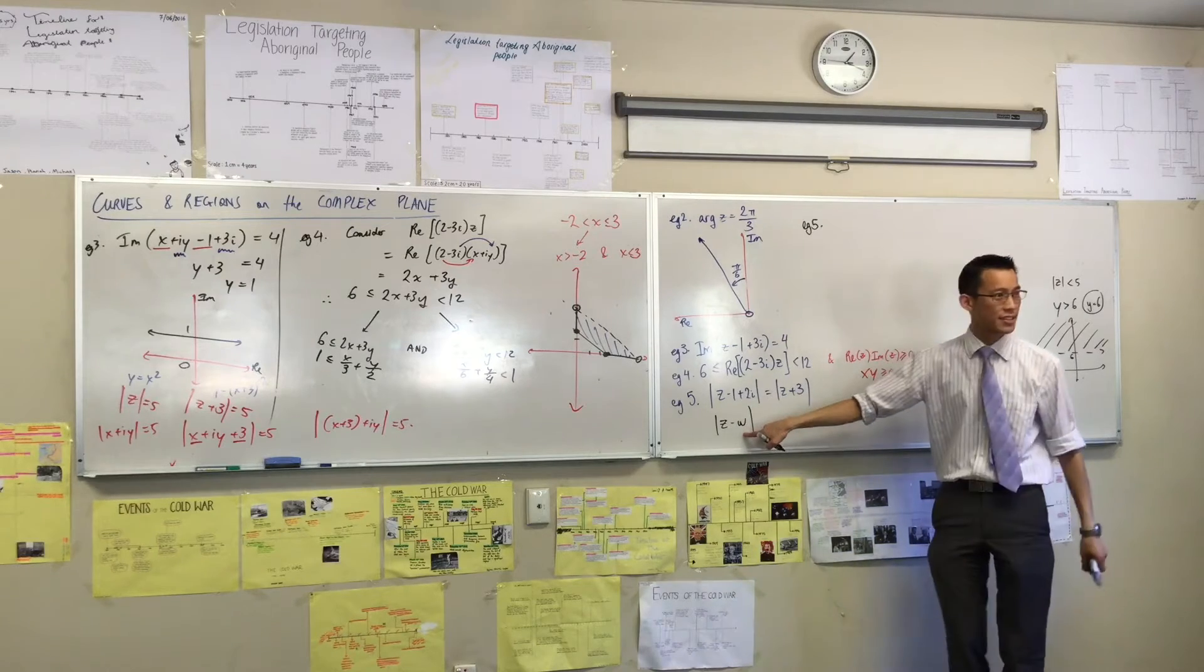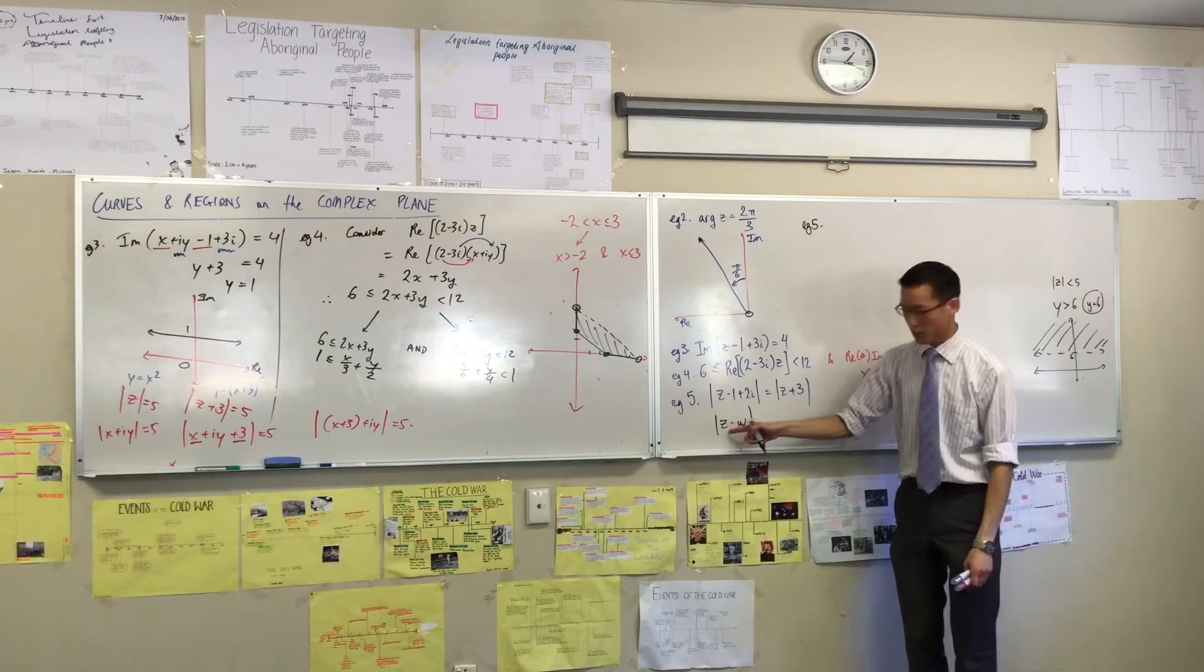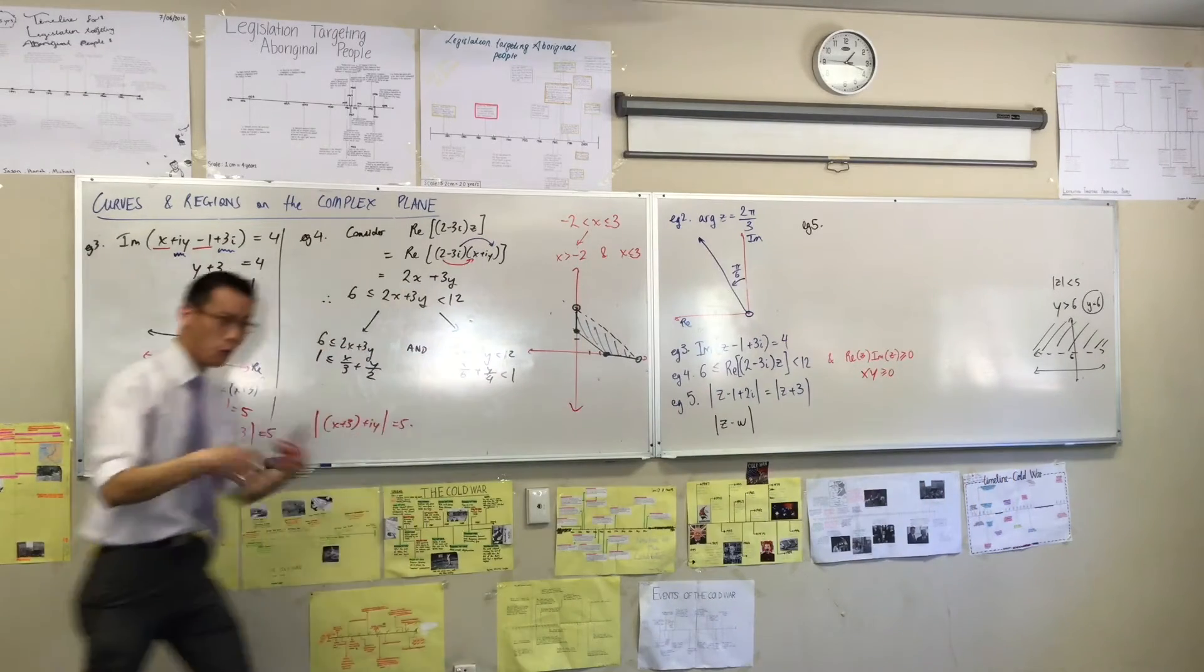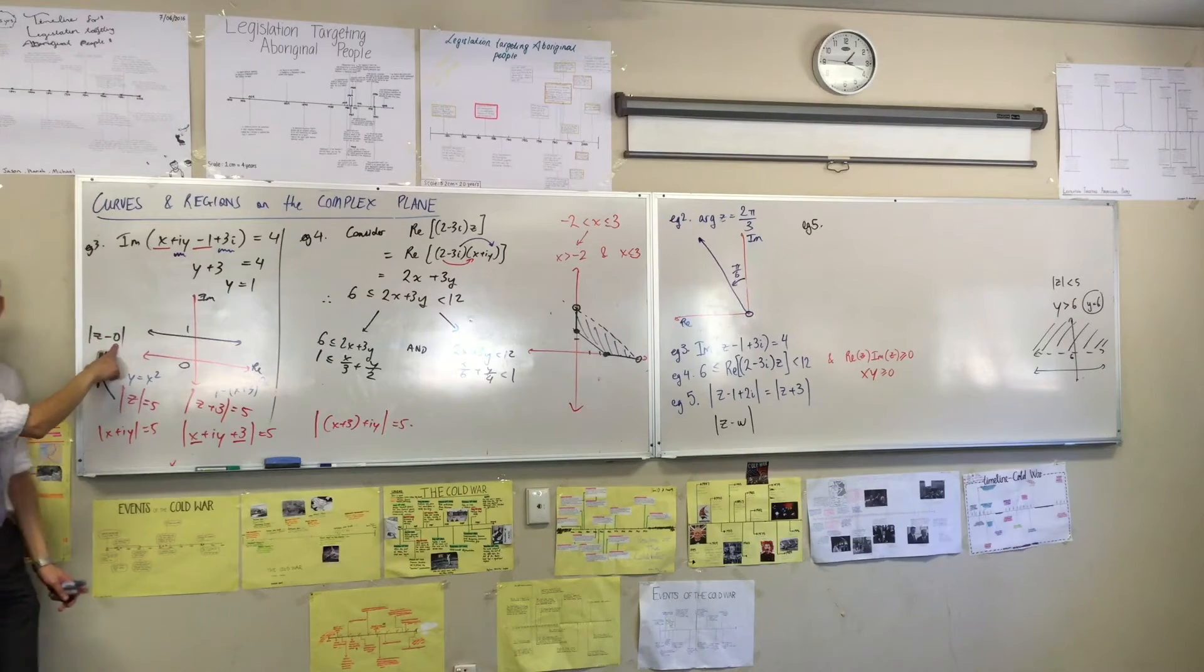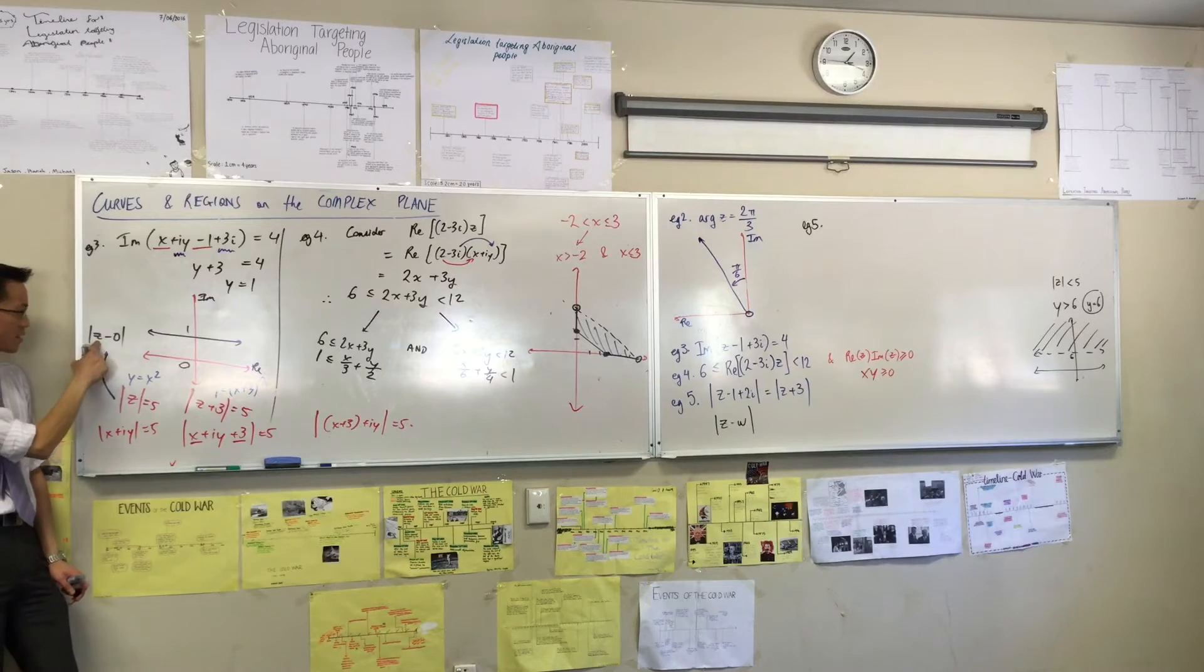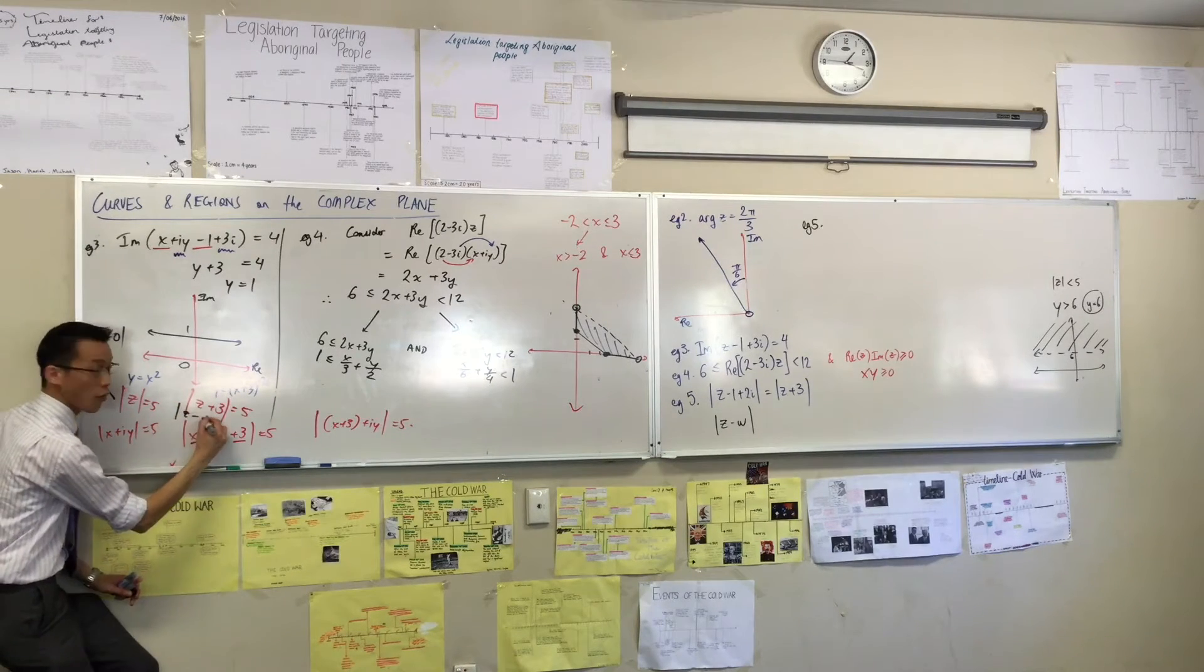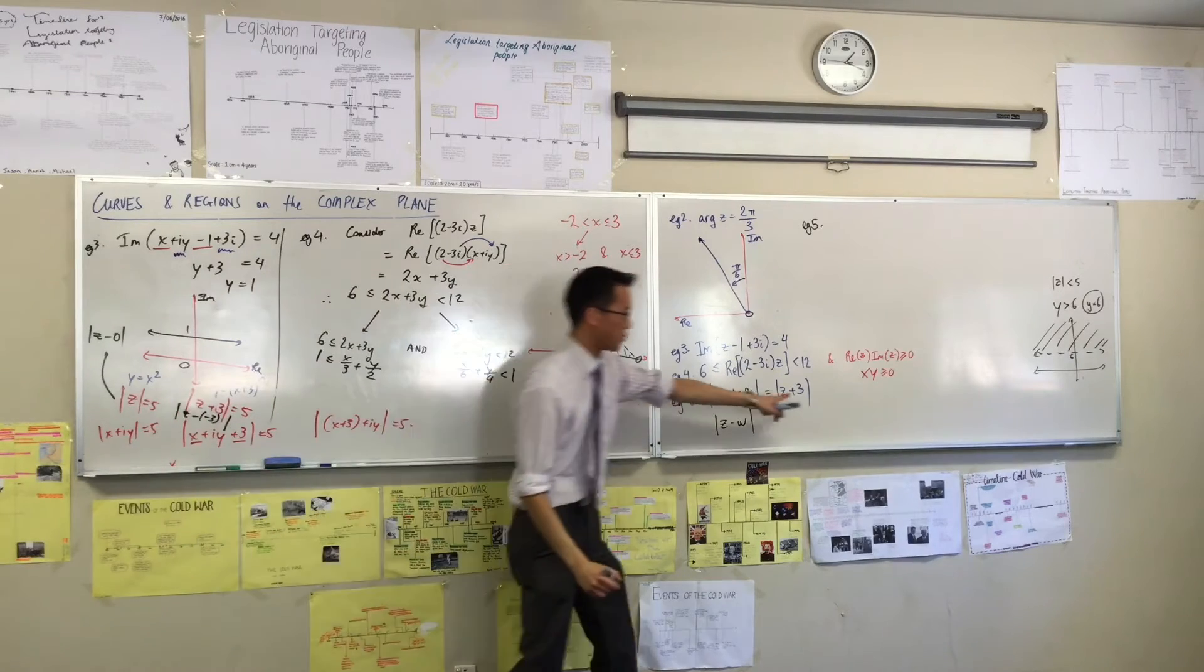If I said to you Z minus W, this is the distance from W, right? So in fact, a better, a more helpful way of writing this is actually as Z take away 0. See, there's the origin. Distance from the origin. Distance from negative 3.